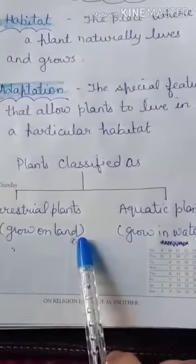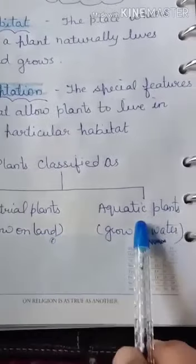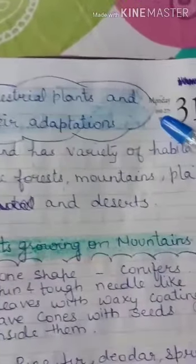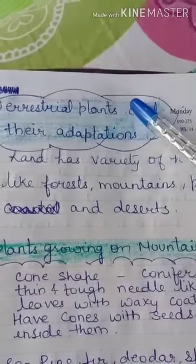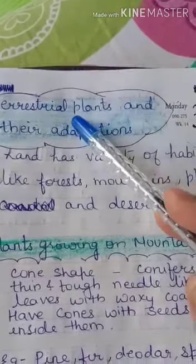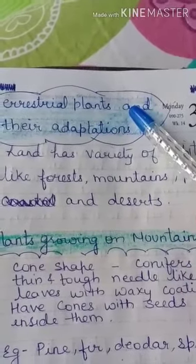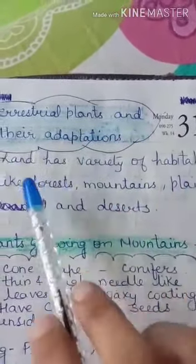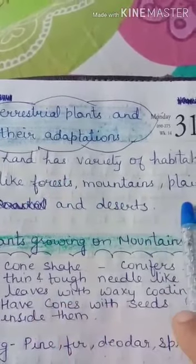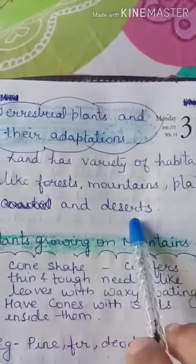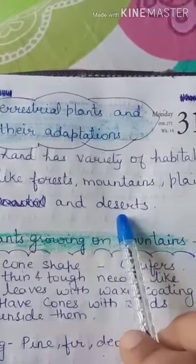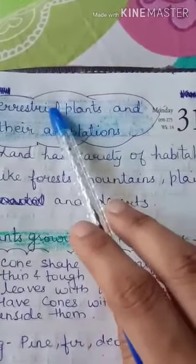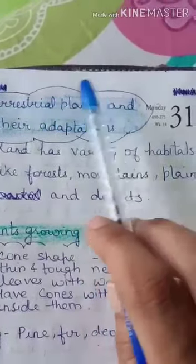Plants can be classified into two types: terrestrial plants and aquatic plants. Terrestrial plants are plants that grow on land, and aquatic plants grow in water. Land has a variety of habitats like forests, mountains, plains, and deserts. Today we will study the adaptation of terrestrial plants.